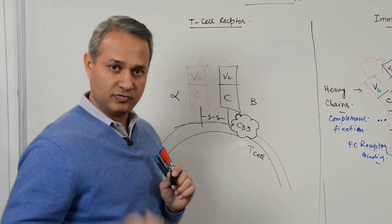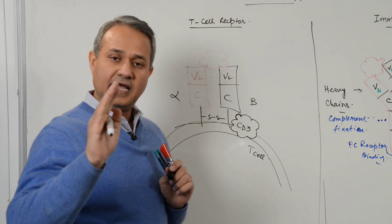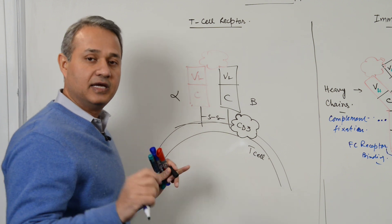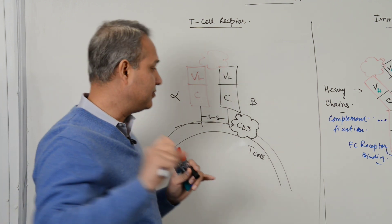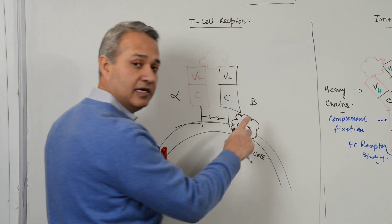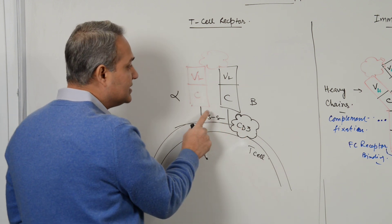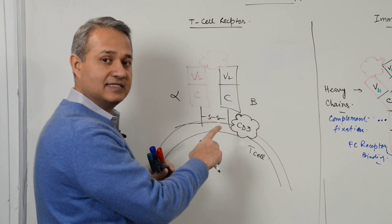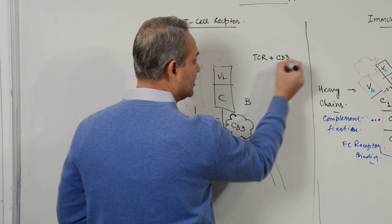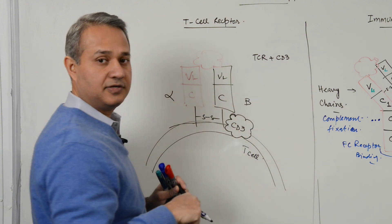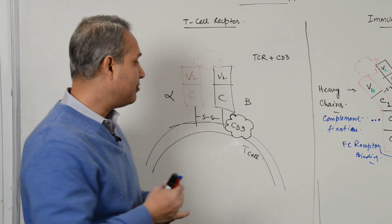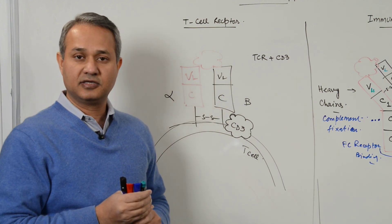T cells are of two primary types: helper T cells, which have CD4 on them, and cytotoxic T cells, which have CD8 on them — but they all have CD3. The CD3 molecule sits next to the T cell receptor, so T cell receptor plus CD3 makes a functional unit. At any one time, about 30,000 such receptors are present on the surface of a T cell.